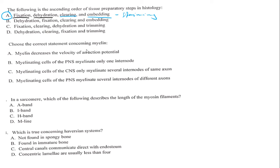The next question asks to choose the correct statement concerning myelin. The first option says myelin decreases the velocity of an action potential — this is wrong, because myelin increases velocity. The correct statement is that myelinating cells of the PNS (peripheral nervous system) myelinate only one internode, which is correct because the PNS has just one axon.